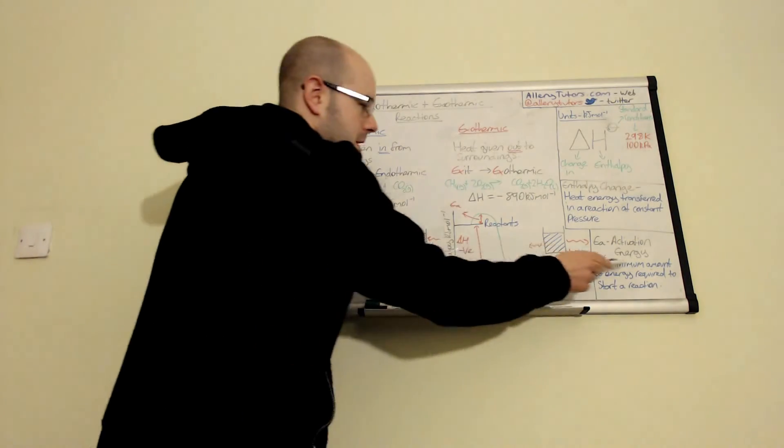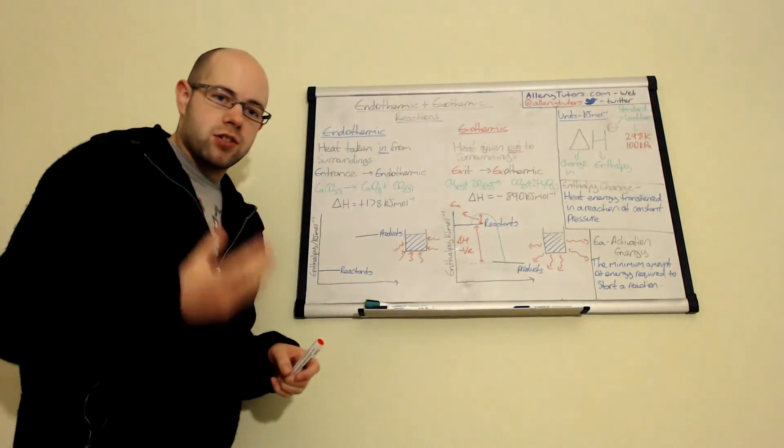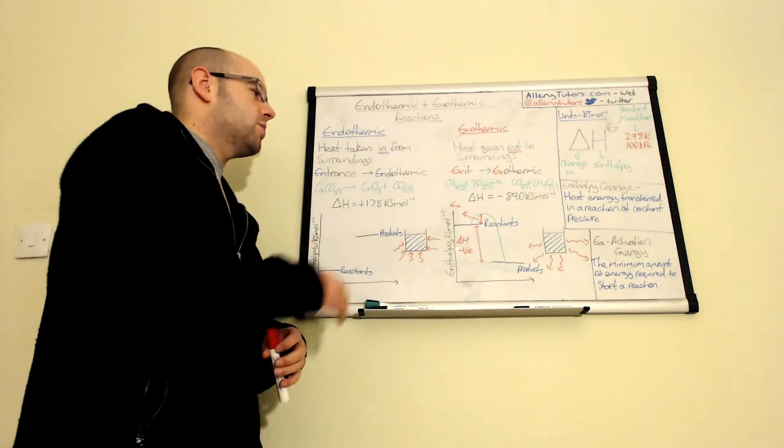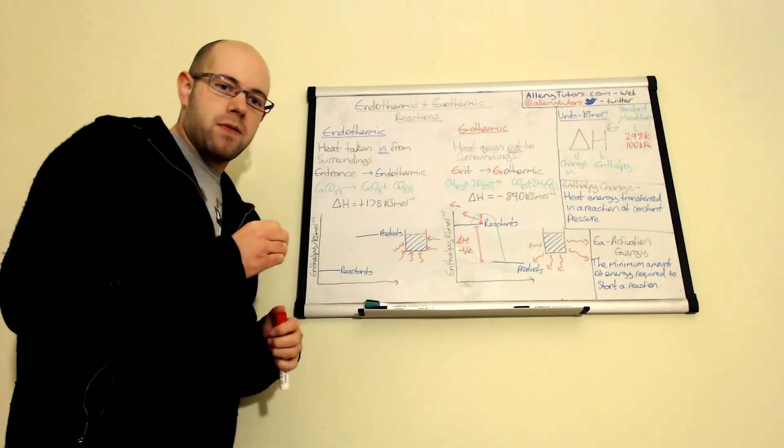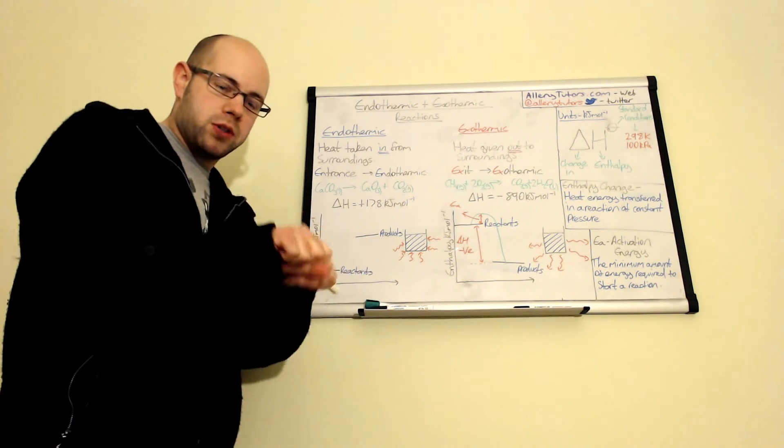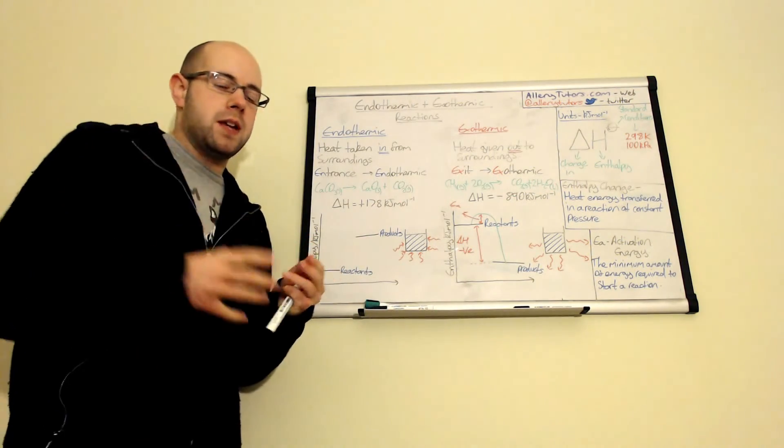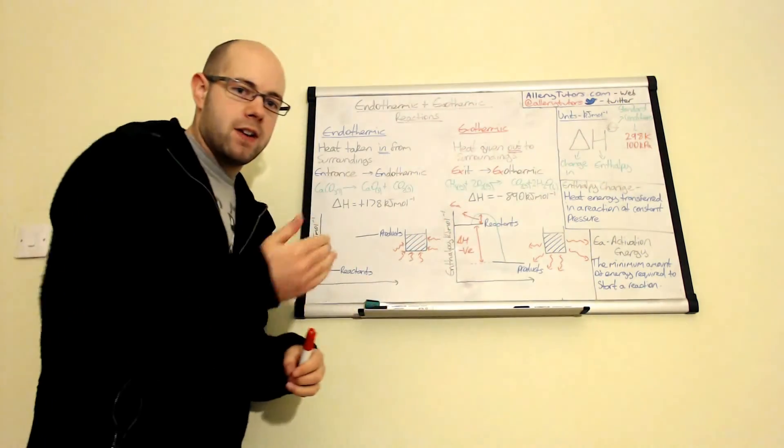Ea is basically the minimum amount of energy required to start a reaction. So this is a bit like trying to get something to move. You need that initial amount of energy just to break the bonds. And then once you've broken your bonds, the reaction will then start to form new bonds and throw out some heat. But you need to put something in there initially.